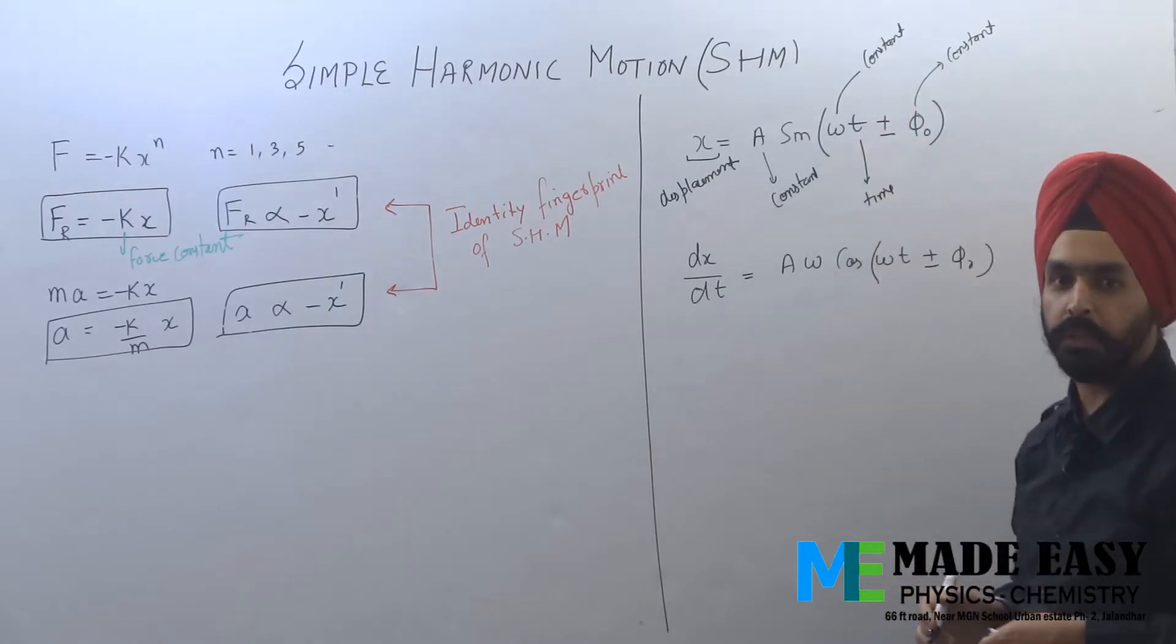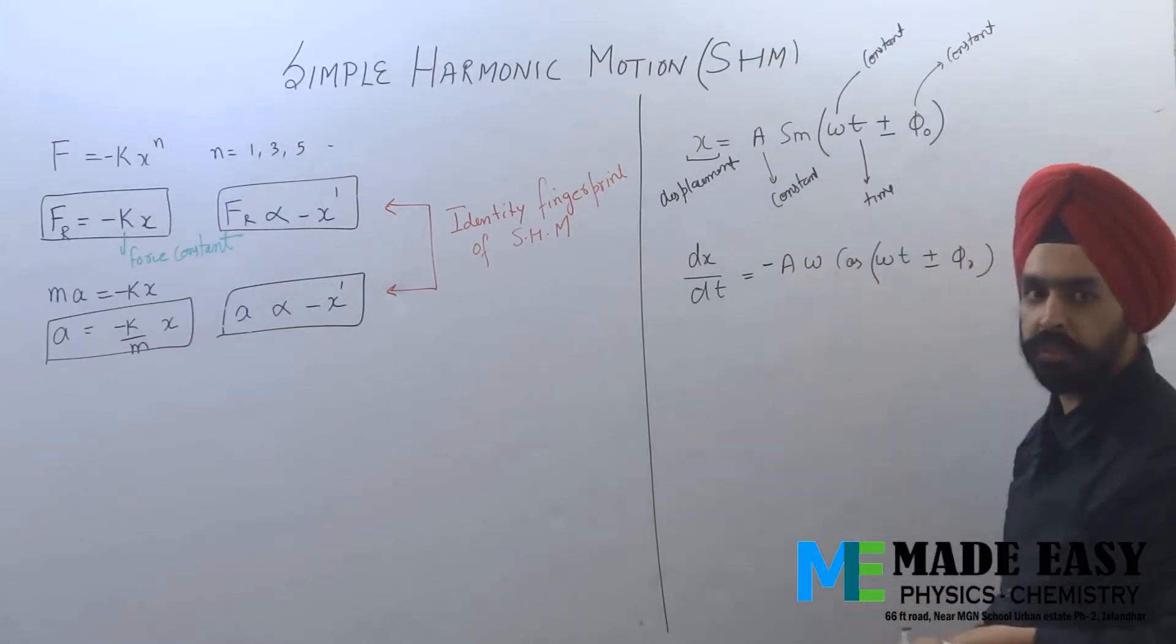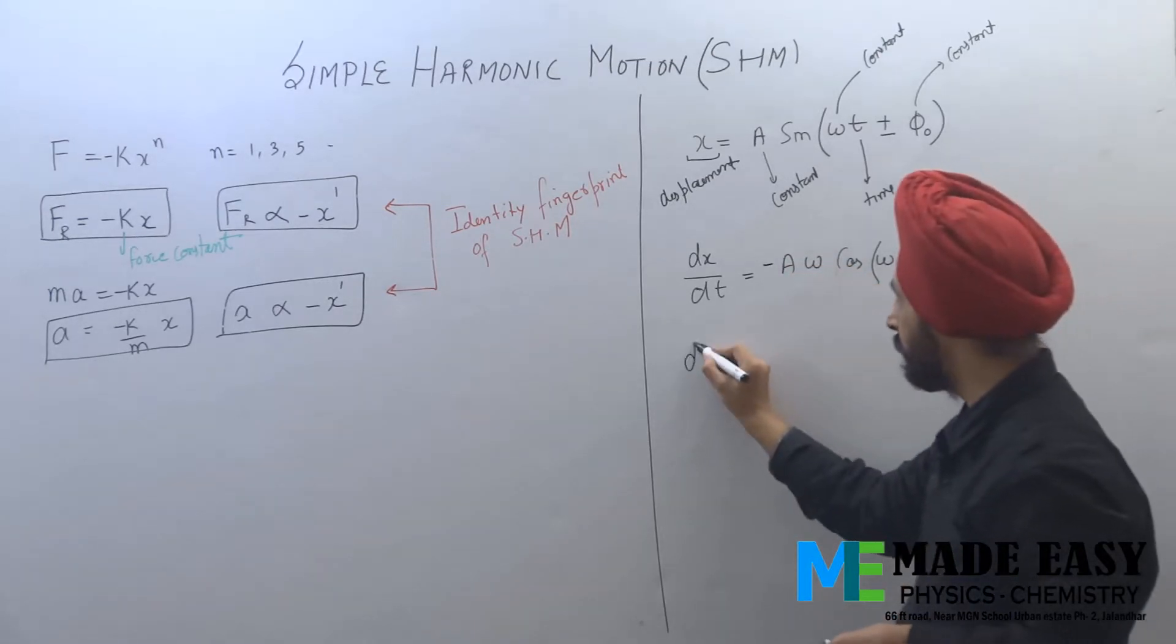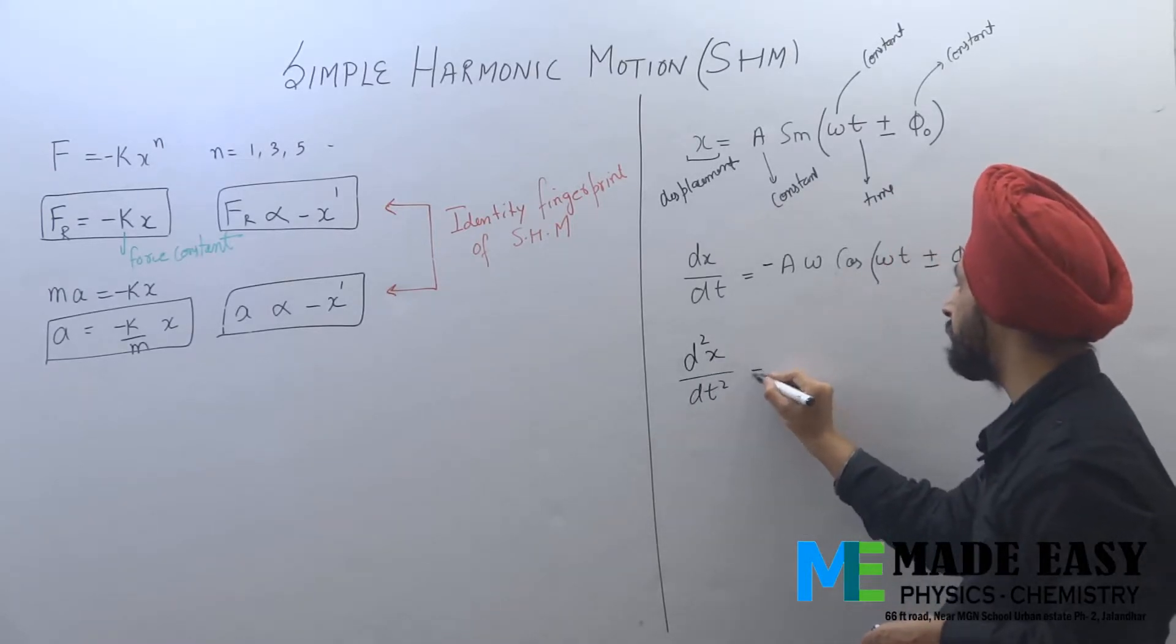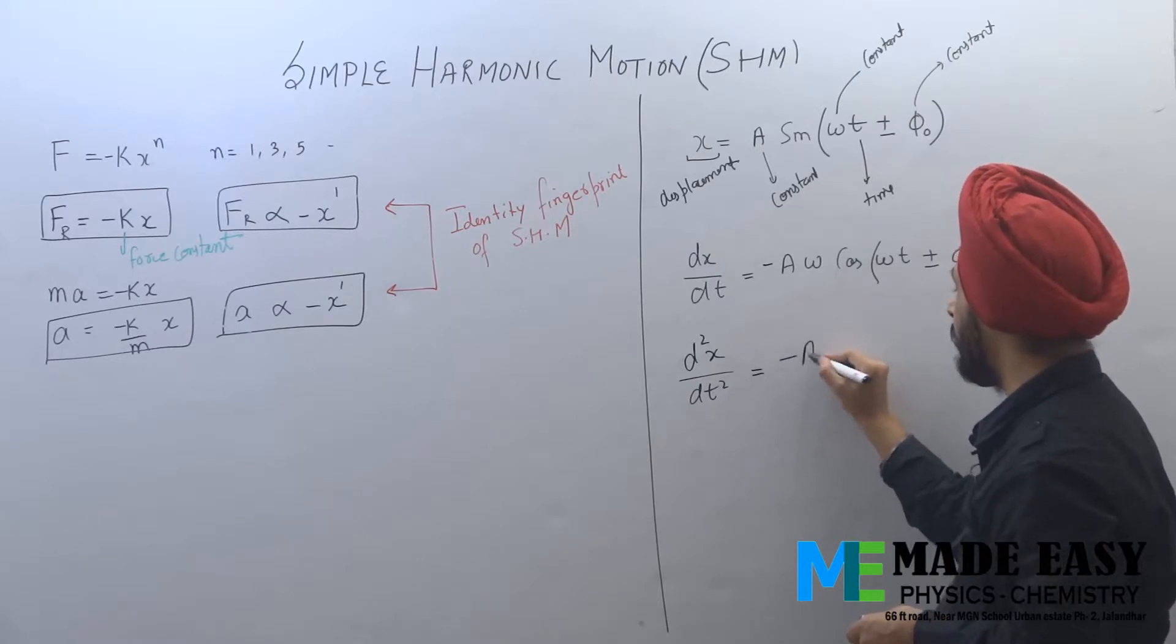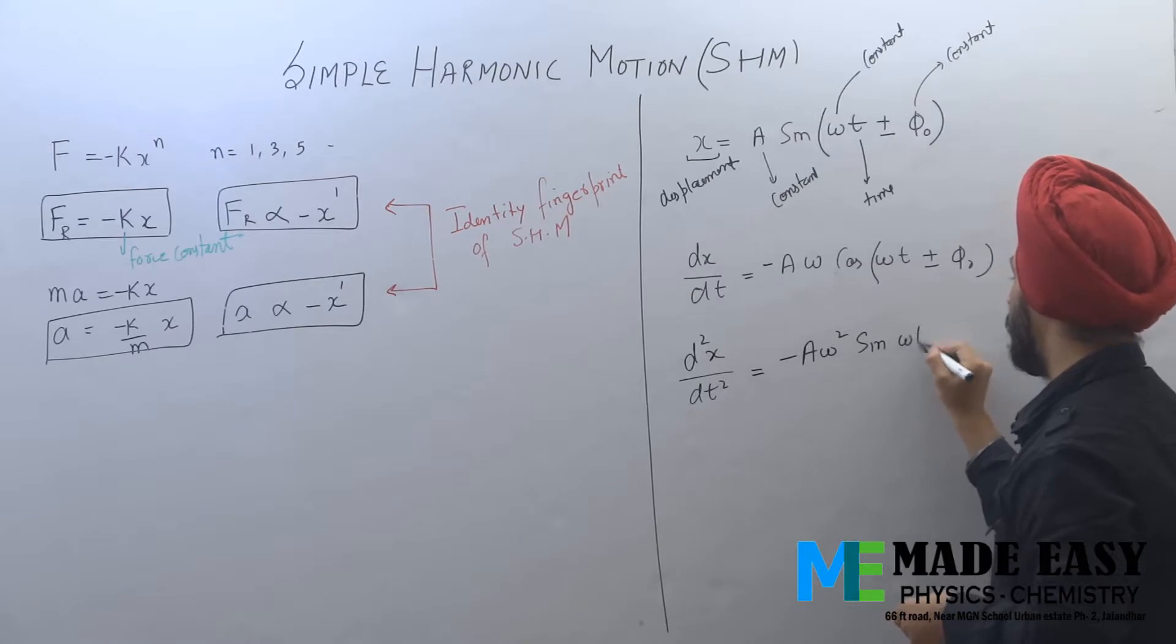Now again differentiate this equation with respect to time. What I get is d square x by dt square. It's a double differentiation of x. What we'll get is minus A omega square sin omega t plus or minus phi naught.